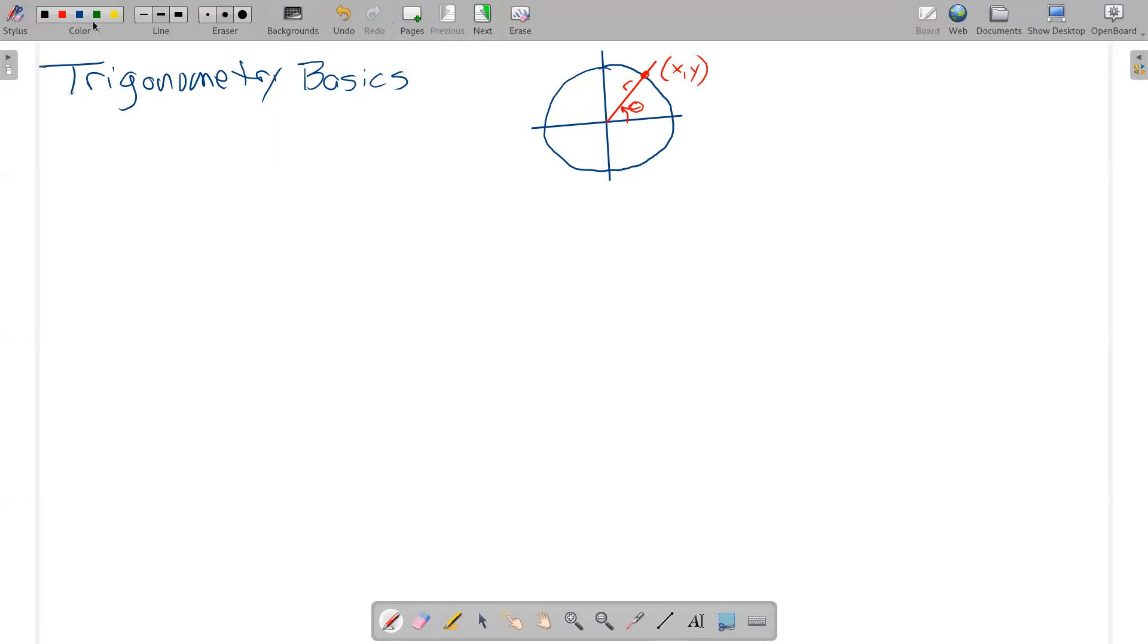And we've also been looking at that as a triangle, because we can drop a perpendicular here. And so we have this right triangle here. R is the hypotenuse, y is the vertical component, x is the horizontal component.